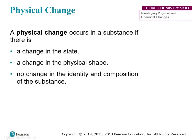Now we're going to talk about a physical change. A physical property is something you can observe by looking at or testing a substance without changing it. A physical change is something actually happening — a change in state (like going from gas to liquid) or a change in physical shape — but with no change to the identity or composition of the substance. Think of it this way: you can change your clothes but you're still the same person. A physical change is an action, whereas a property is just a description.